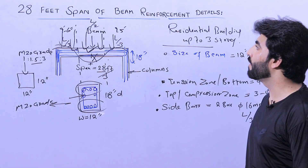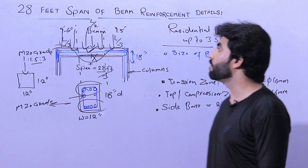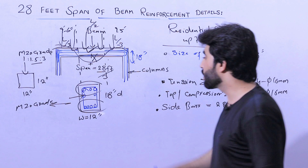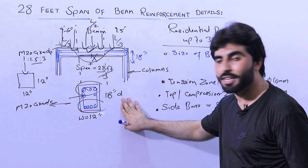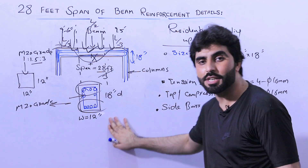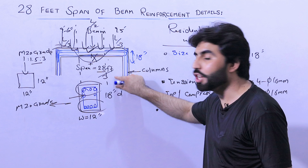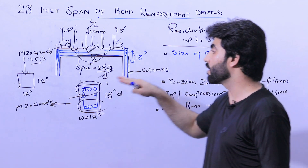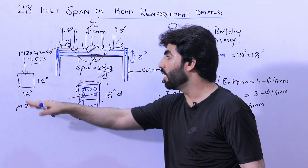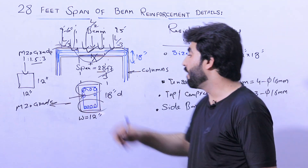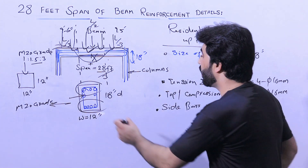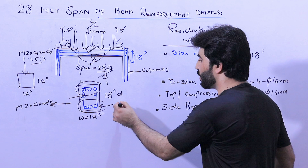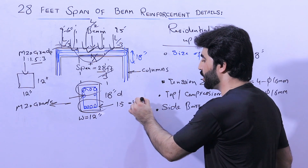This is a short video in which I have guided you for a 28-feet span beam with a size of 12 by 18 inches: 4 bars at the bottom 16 mm, 3 at the top 16 mm, 2 side bars, M20 grade concrete with a concrete cover of 1.5 inches — or normally 40 mm.